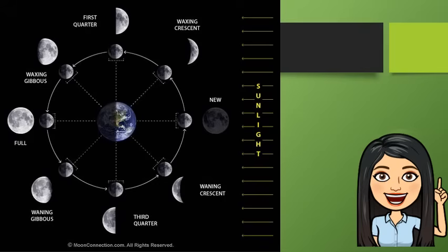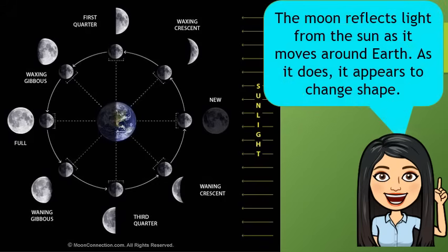Did you notice the shape of the moon? The moon reflects light from the sun as it moves around the Earth. As it does, it appears to change shape. Sometimes, the moon appears as round as a ball or full moon. Sometimes, only a part is seen. Other times, it is not visible at all. The apparent changes in the moon's appearance as seen from Earth is called Phases of the Moon.